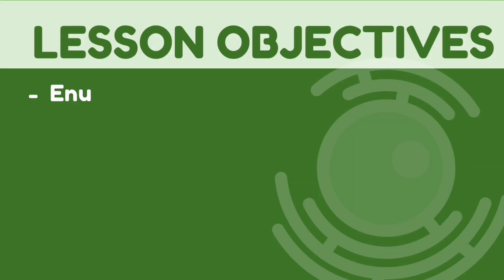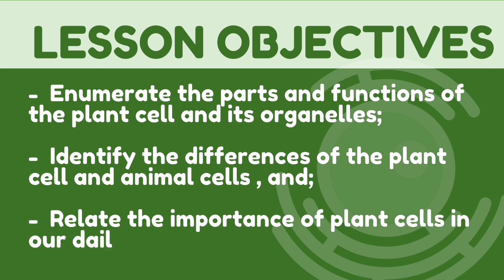We are also going to learn the differences between plant cells and animal cells — for example, the presence of chloroplasts in plant cells and their absence in animal cells. Moving on to our lesson objectives: at the end of this lesson, you will be able to enumerate the parts and functions of the plant cell and its organelles, identify the differences between plant and animal cells, and relate the importance of plant cells in your daily life.